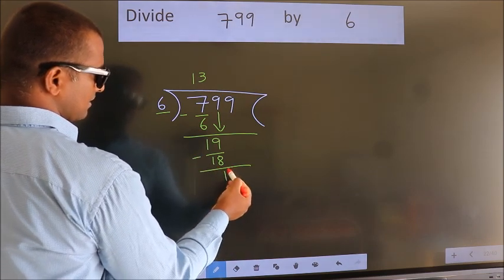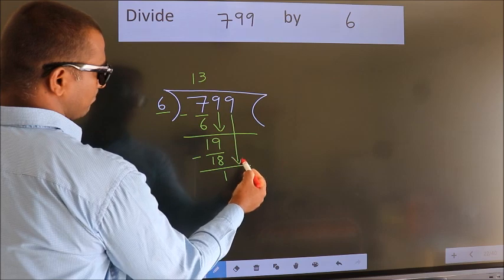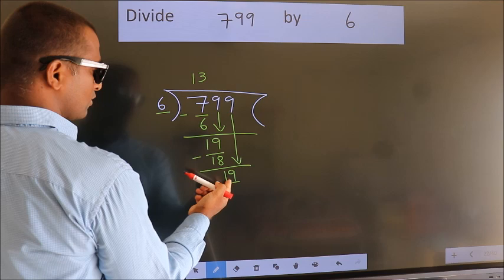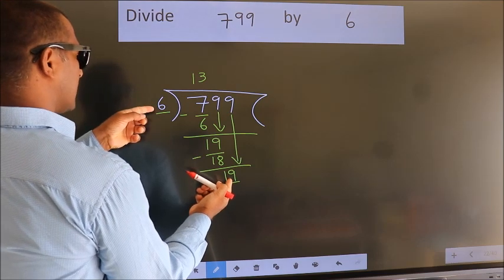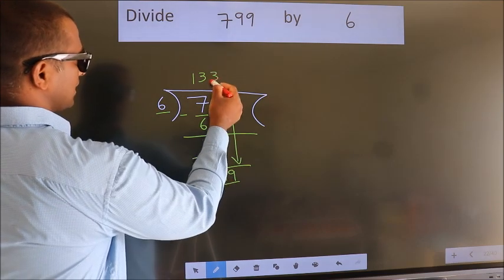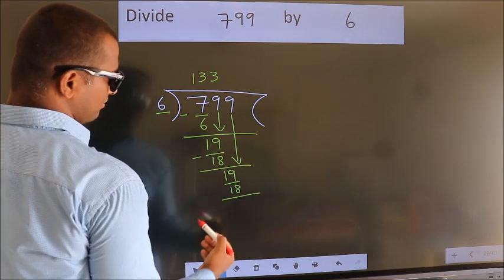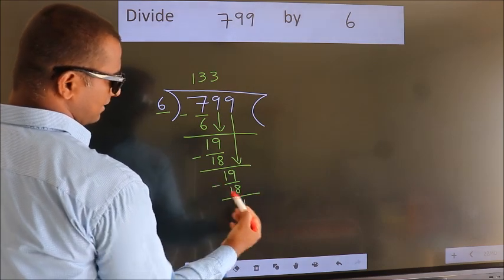After this, bring down the beside number. 9 down, so 19. A number close to 19 in the 6 table is 6 threes, 18. Now we subtract. We get 1.